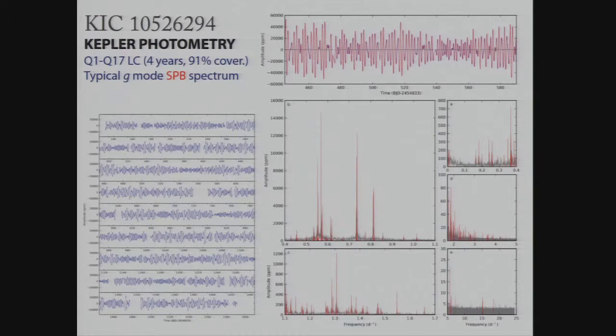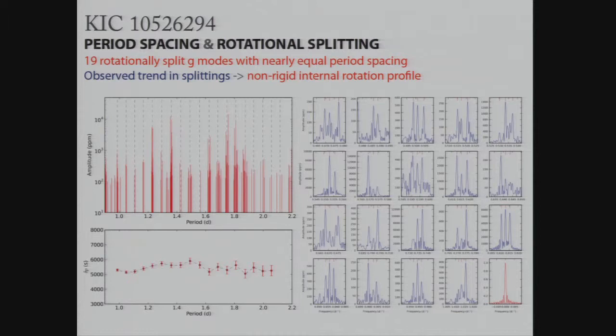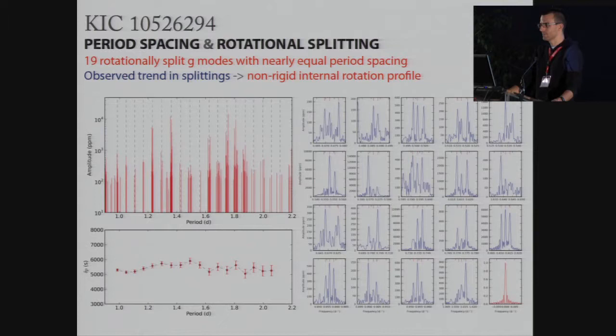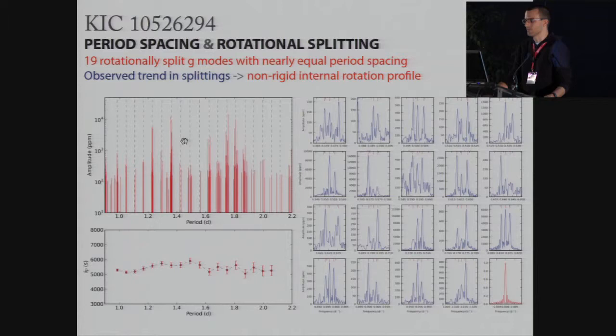We analyzed all 17 quarters of long cadence Kepler data, which adds up to four years with 91% duty cycle. You can see the light curve on the left and the periodogram on the right. Most of the power is concentrated in the typical g-mode regime between around 0.4 and 1.1 cycles per day. At higher frequencies you can see many combination frequencies, but unlike Don's case which was a nice hybrid star, we don't see p-modes. But when you zoom into the g-mode region you can find 19 consecutive rotationally split g-modes with nearly equal period spacing.